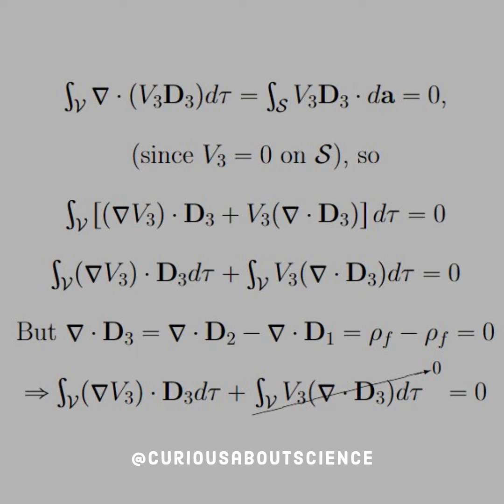But since we know that del dot D is equal to del dot D2 minus del dot D1, where both of those are equal to the free charge, free volume charge rho F, if those two things are equal, then they go to 0. So the second integral that we have here goes to 0. That's very easy and very nice to see.